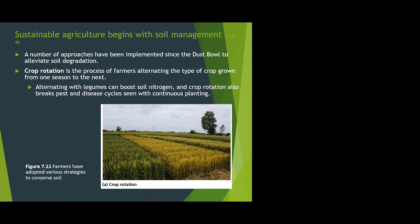Sustainable agriculture is what we really need to switch to and there are a number of approaches that have been implemented. One key technique is crop rotation — the process where the farmer alternates the crops every year. One year they might have corn in an area, and the next time they put beans in, because these two plants work together: corn needs nitrogen and beans put nitrogen back into the soil, so when the corn is planted there again it gets that nitrogen.